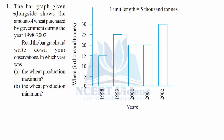Question 1: The bar graph given alongside shows the amount of wheat purchased by government during the years 1998 to 2003. Read the bar graph and write down your observations. In which year was the wheat production maximum, and in which year was the wheat production minimum?